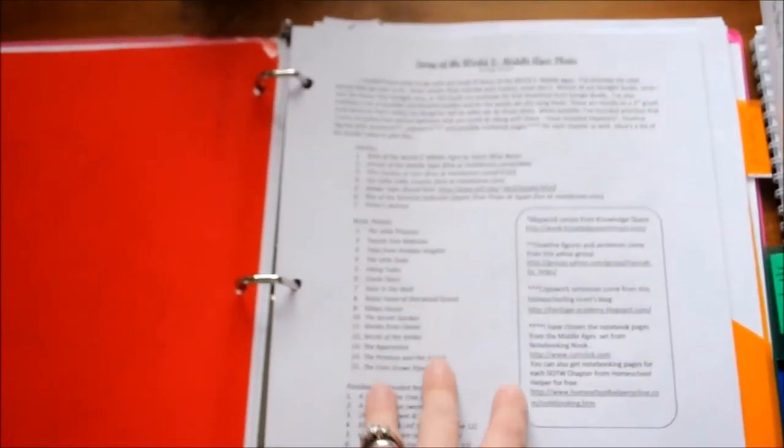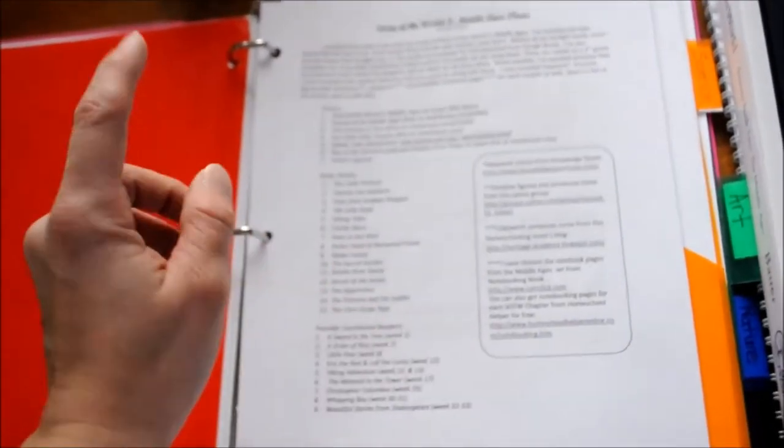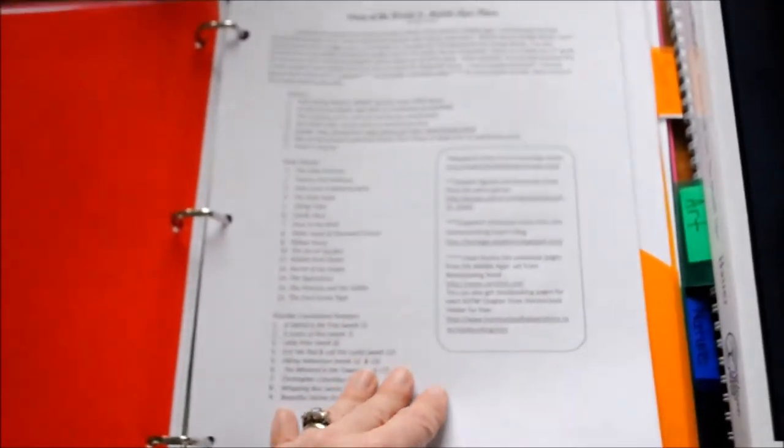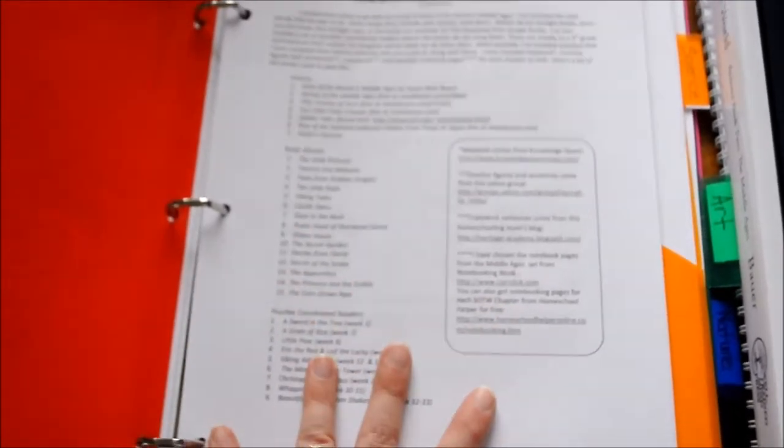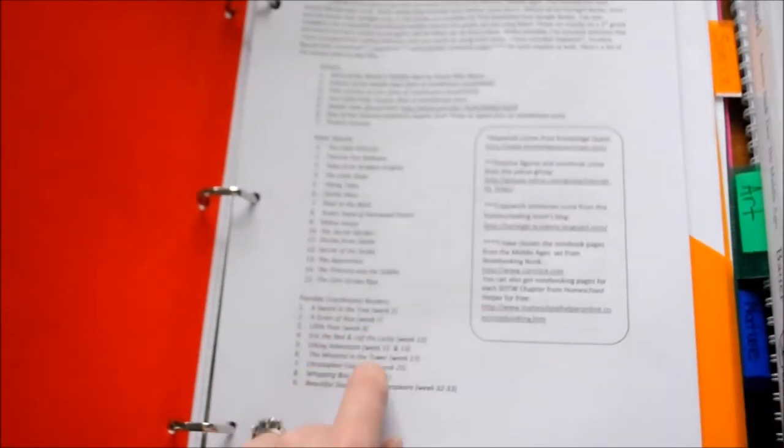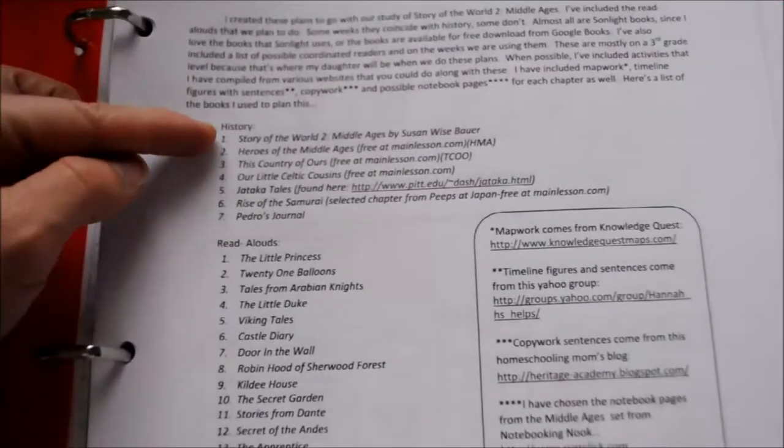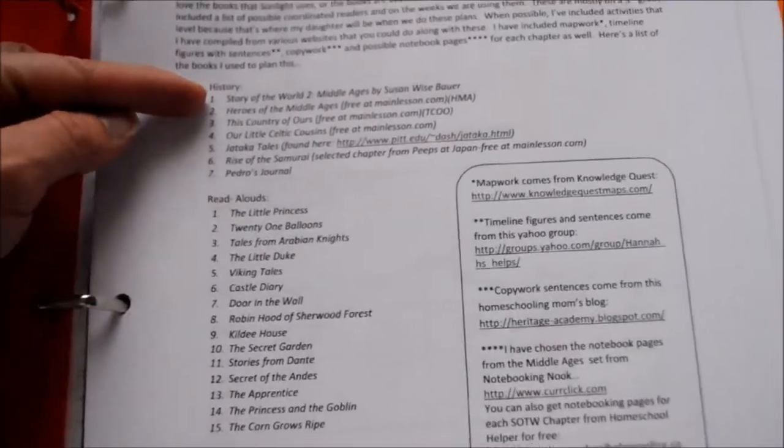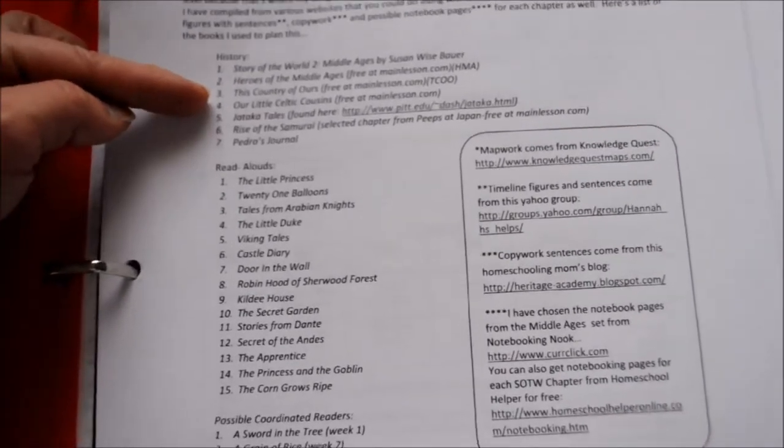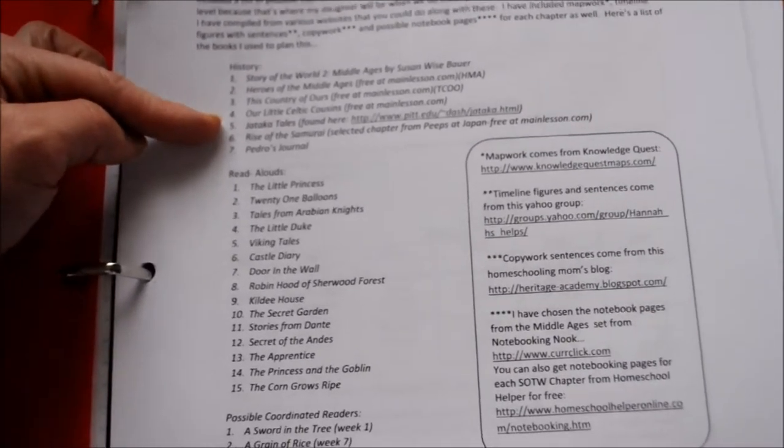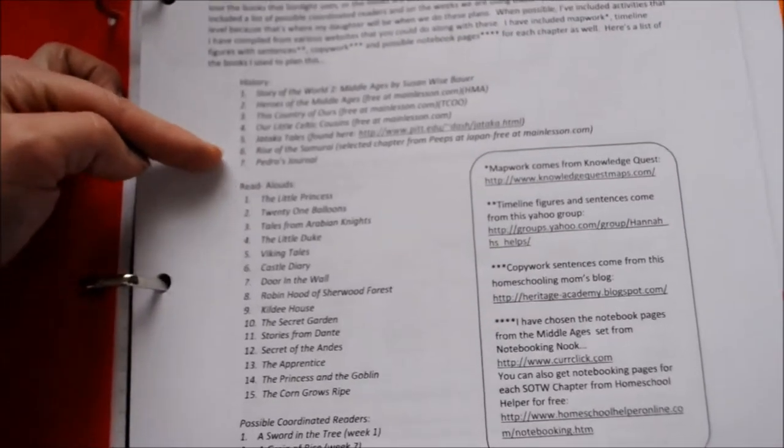I follow this Story of the World for Volume 2 from Paige Hudson. She does Elemental Science, so on her blog she has this. This is from a while ago, I mean this is not like super recent, but I love this plan. So what she has on here is what she's using for history, which is Story of the World 2 Middle Ages, Heroes of the Middle Ages which you can get free, This Country of Ours which you can get free, Our Little Celtic Cousins, Jakarta Tales, Rise of the Samurai, and Pedro's Journal.